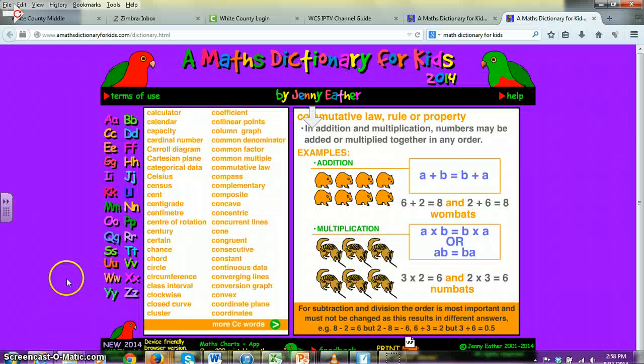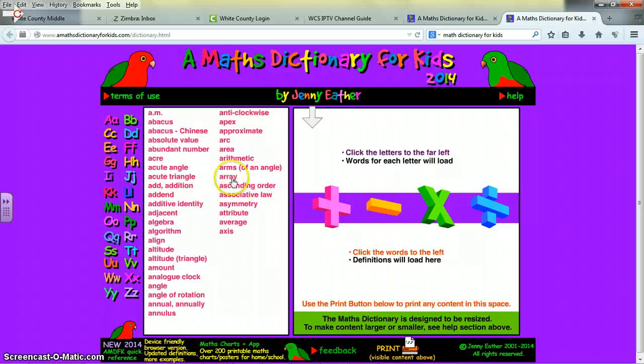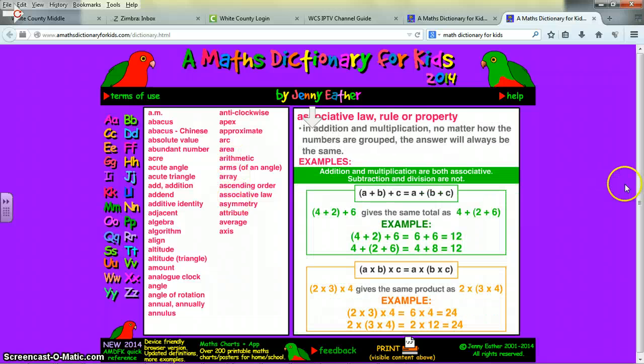Let's get the definition from our dictionary here. Go to the A's. Associative. And here's the definition. In addition and multiplication, no matter how the numbers are grouped, the answer will always be the same. And you can see the example here. 4 plus 2 plus 6 is the same as 4 plus 2 plus 6 in the multiplication example.